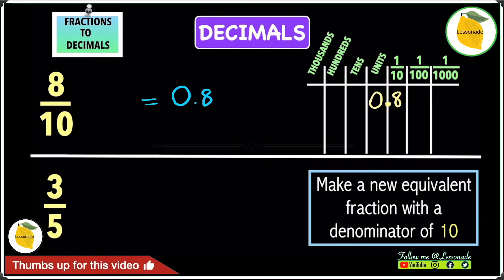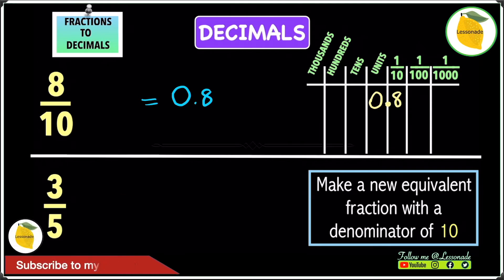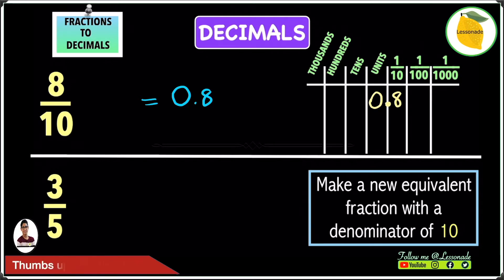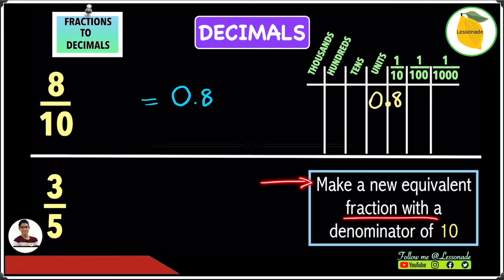Now let's look at the next example, which is 3 over 5. In this case the fraction does not have a denominator of 10, 100, or 1000. When the fraction has a denominator that is not 10, 100, or 1000, we have to make an equivalent fraction with a denominator of 10.